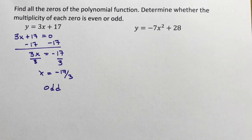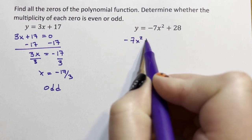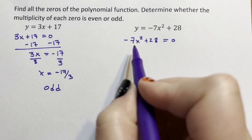This one has two zeros, so it's a potential for an even multiplicity. We take negative 7x squared plus 28 equals zero. It's not likely to be even, but we will find out.